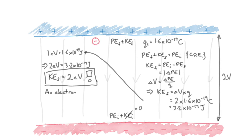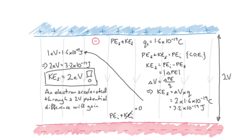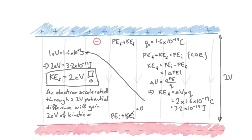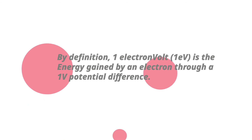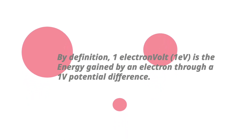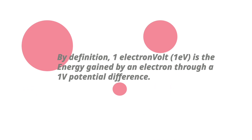An electron accelerated through a 2-volt potential difference will gain 2 electron volts of kinetic energy — that's the definition. If it goes through 5,000 volts, it gains 5,000 electron volts. By definition, one electron volt is the energy gained by an electron through one volt of potential difference.